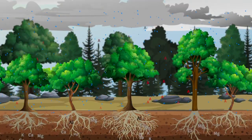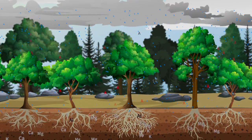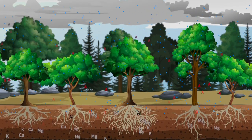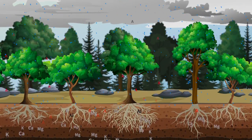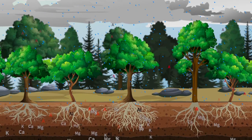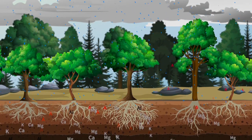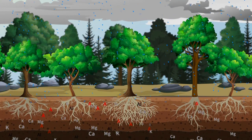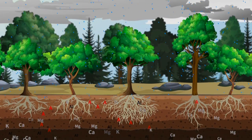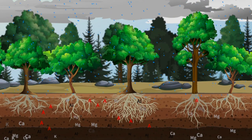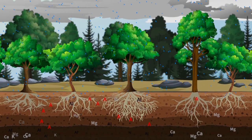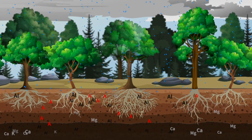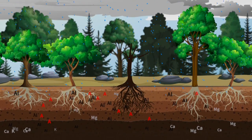When excess sulfur or nitrogen is deposited into a terrestrial ecosystem, like a forest, changes to soil chemistry may occur. One of the results is soil acidification, which removes nutrients like calcium, magnesium, and potassium from the soil, causing nutrient imbalances and deficiencies in higher plants like trees. Additionally, soil pH can decrease, and the amount of dissolved aluminum in the soil, which is toxic to plants, can increase.